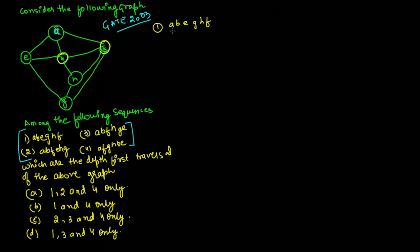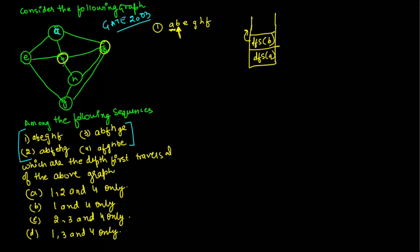In this sequence, we started from vertex A. From vertex A, there are three adjacent vertices: E, B, and F, so we can visit any one of them. Here they have chosen B, so we call DFS of B. When we call DFS of B, the adjacent vertices are E, F, and H, so we can choose any one of them.